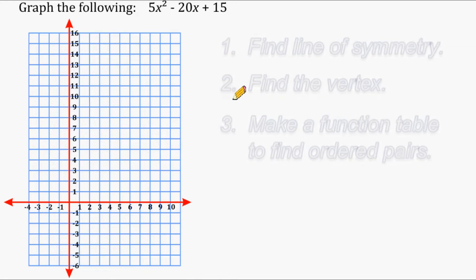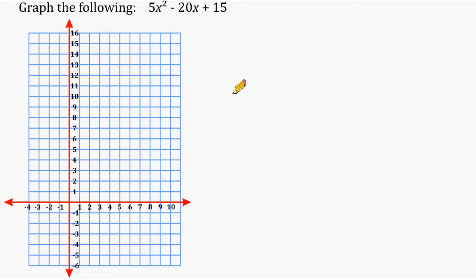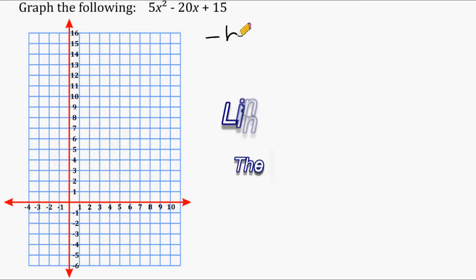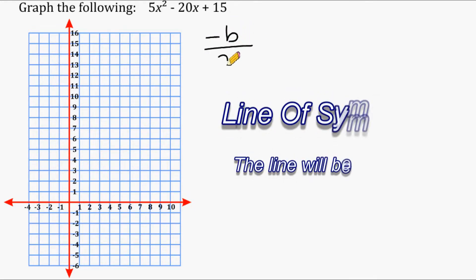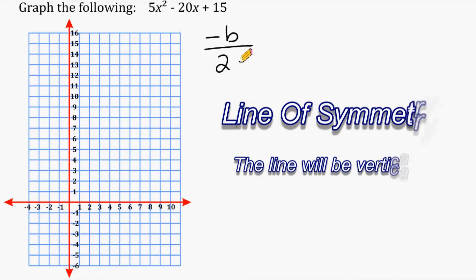The first thing we want to do is identify the line of symmetry. The formula negative b divided by 2a is the way to figure out where the line of symmetry runs through the x-axis.